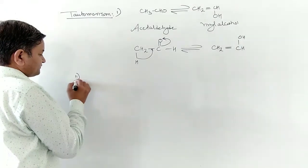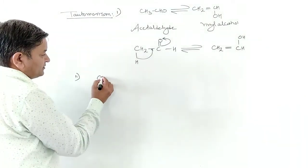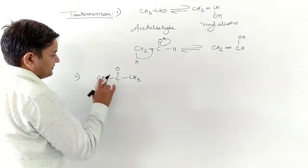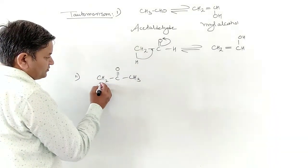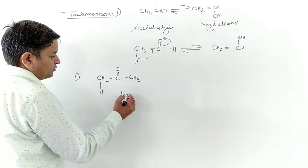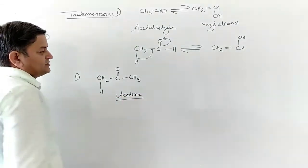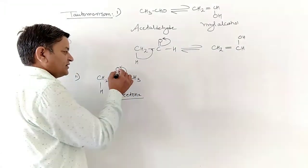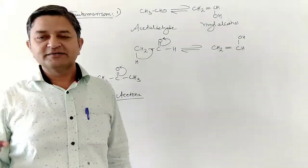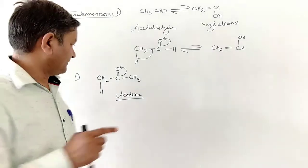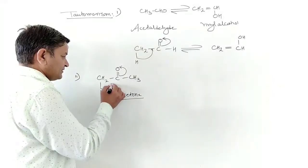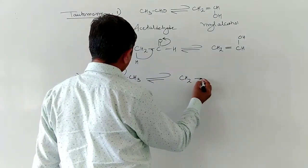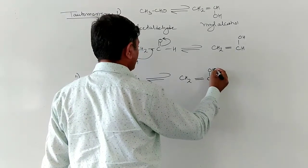A second example: if we have CH3-C(=O)-CH3, this is called acetone. If we apply the same rearrangement — because oxygen is more electronegative than carbon, the electron pair shifts back — what we get is CH2=C(OH)-CH3. Here the oxygen carries a negative charge and hydrogen carries a positive charge, giving us the enol form.